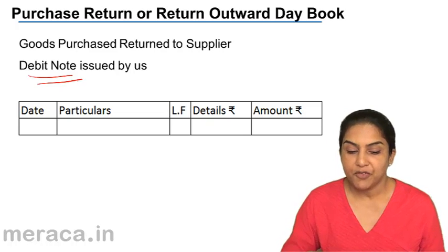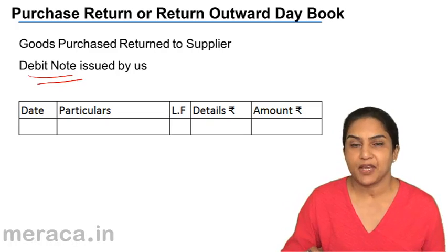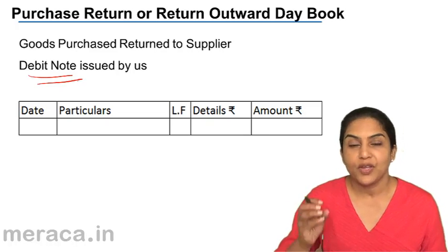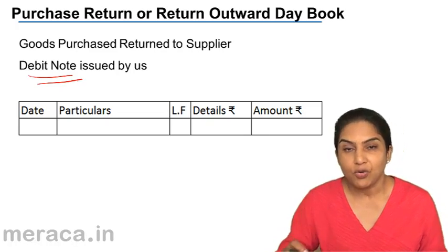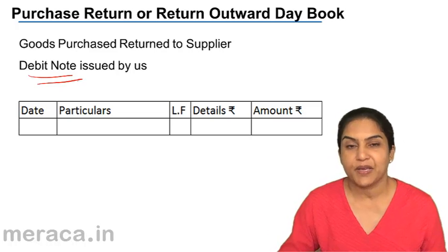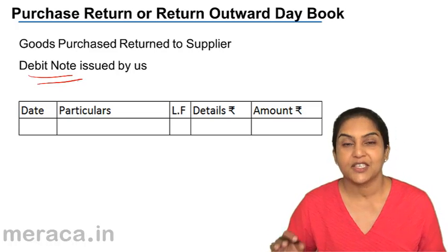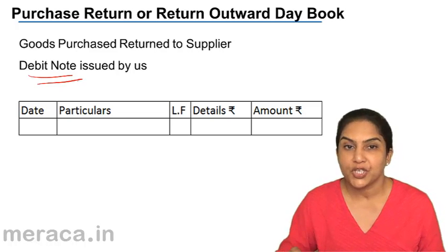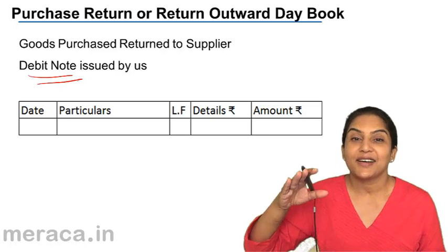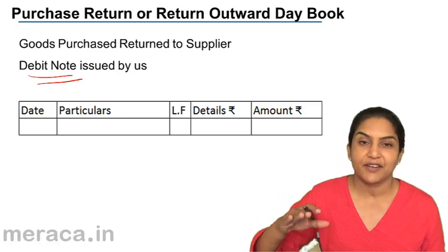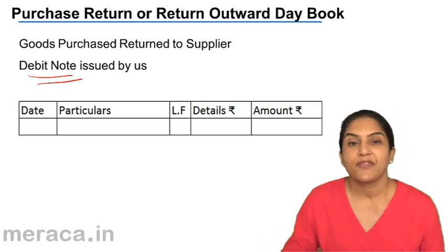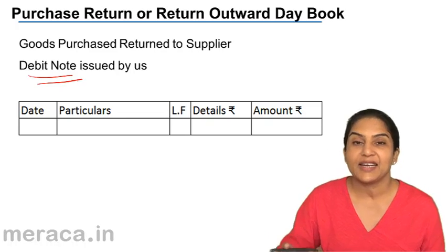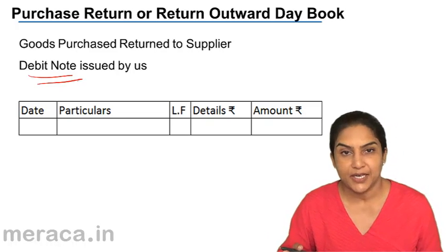The format is the same — there is no separate debit or credit column. Because purchase return is always a reduction in expense and therefore always a credit. Just like purchases are always a debit as an expense, purchase return is a reduction in purchases and will always have a credit balance.